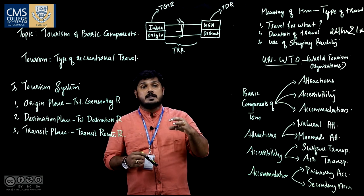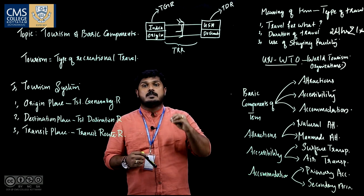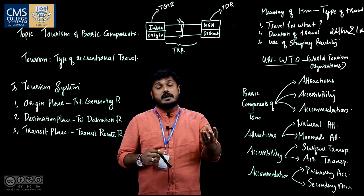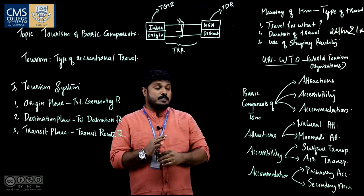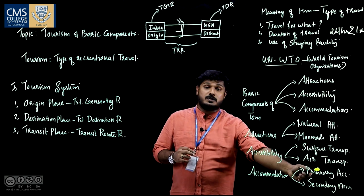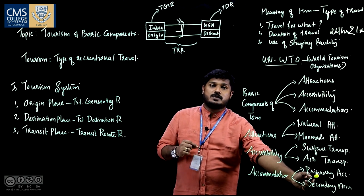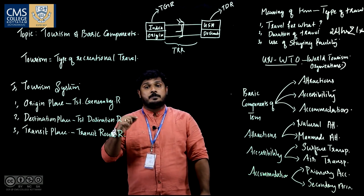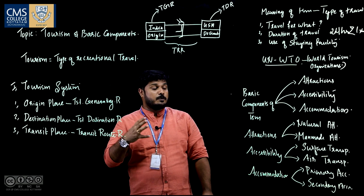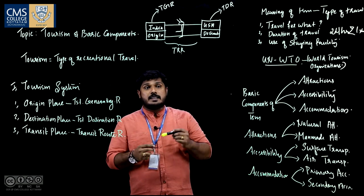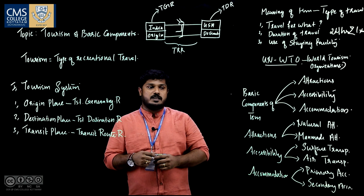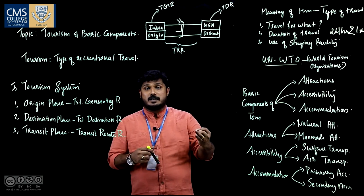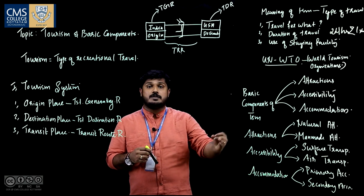Primary accommodation means accommodation units that provide staying facility, entertainment facility, food and beverage facility, and all other necessary facilities to the tourist. For example: all categories of hotels and resorts. Secondary accommodation units provide only limited services — either stay or food. For example, lodges provide stay facility only, and restaurants provide food and beverages only.